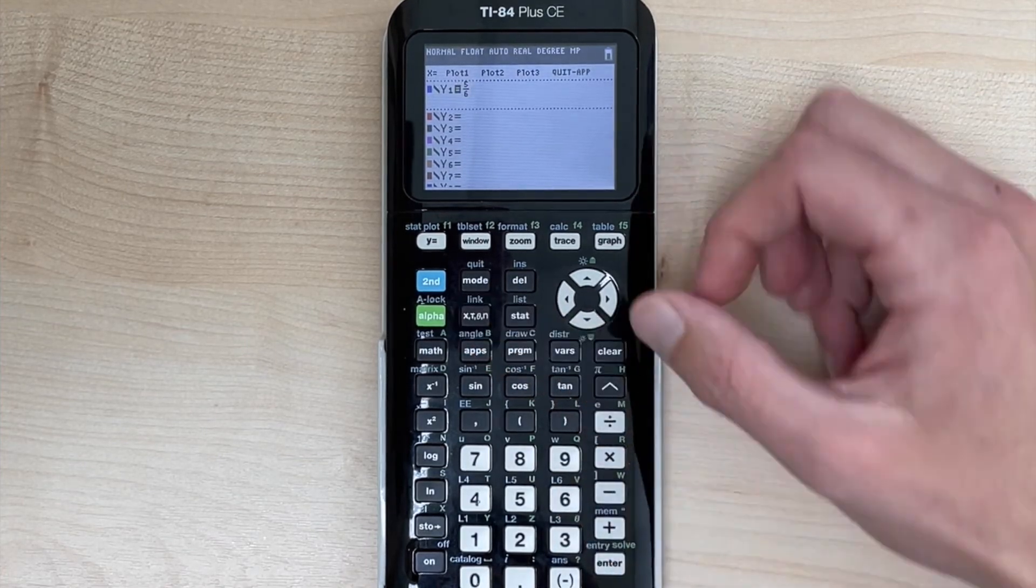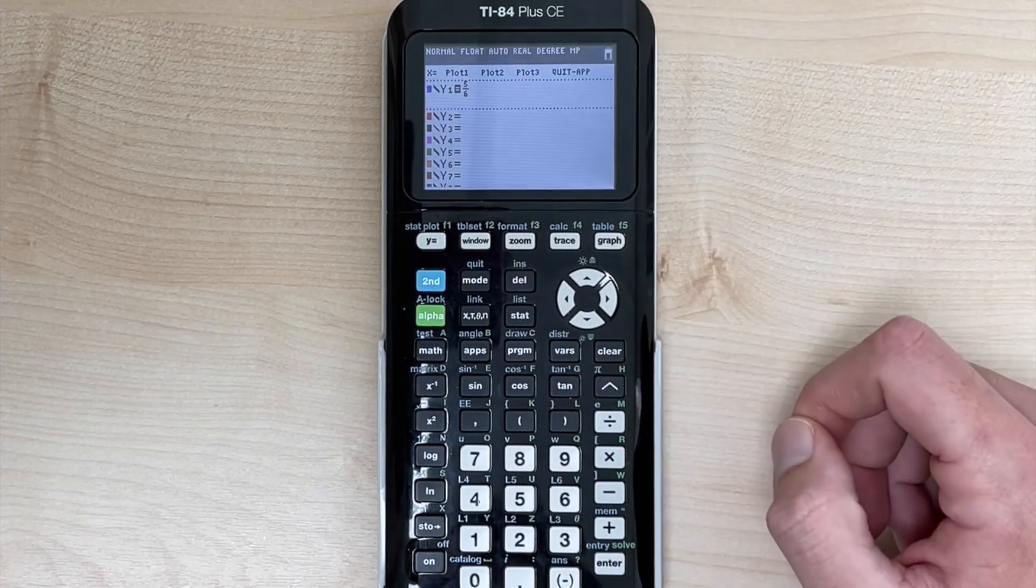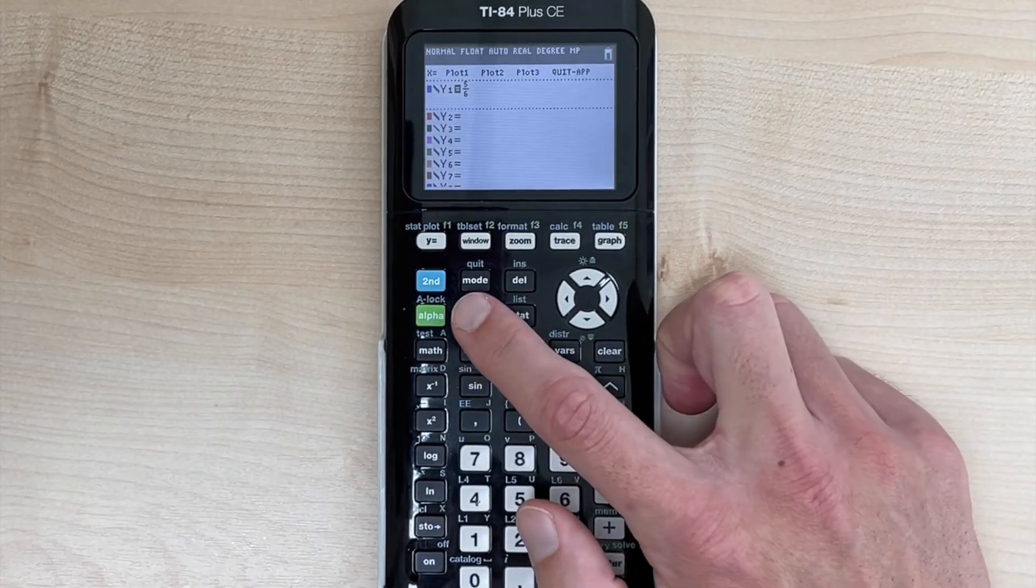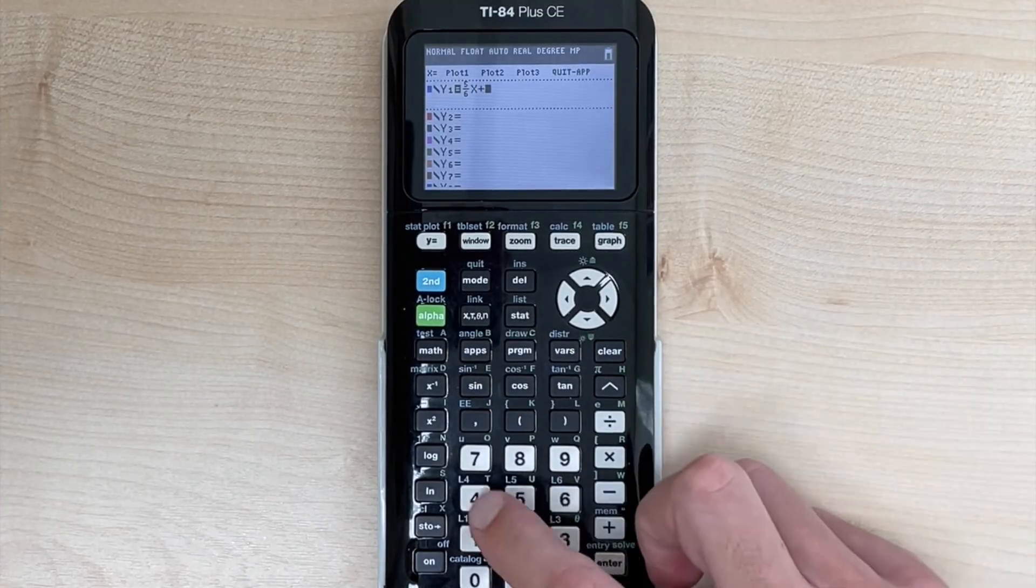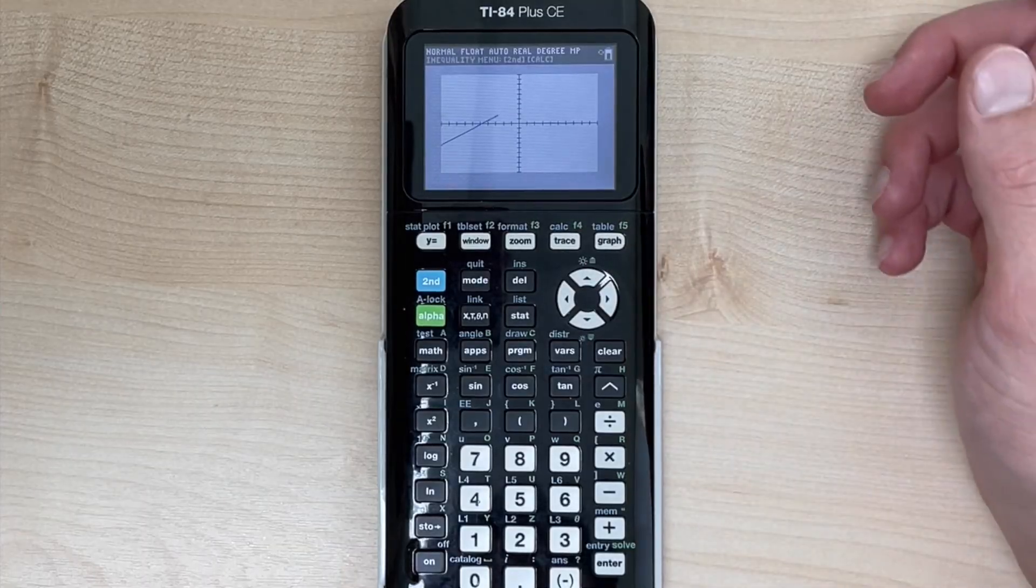And then my x variable is located right here next to alpha. So we're going to hit the x variable and then plus four. And then we could hit the graph.